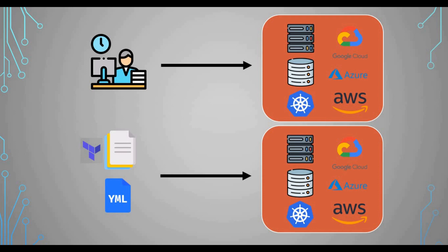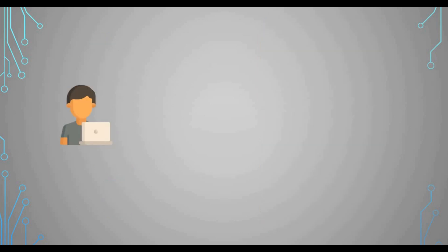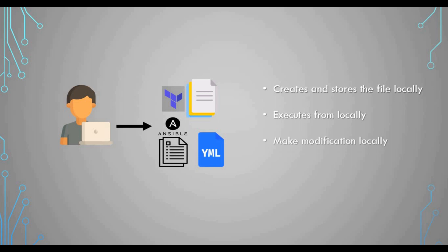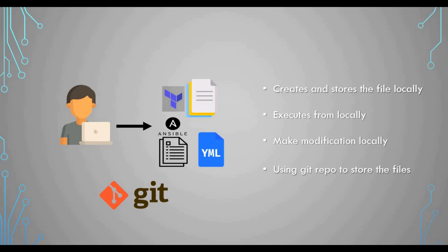When you create these configuration files as a DevOps engineer — whether YAML, Terraform, Ansible, or other files — you normally create and store these files locally on your computer and execute them from your local system. When you want to make modifications, you do it locally. Sometimes you may also be using Git repositories to store your files, but typically the DevOps engineer writes code, stores it locally, and deploys it from their own system.